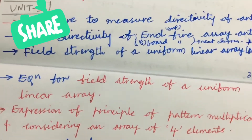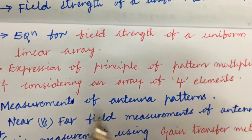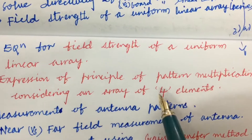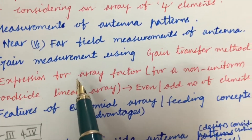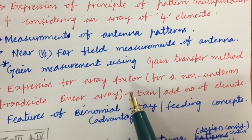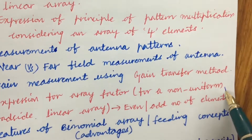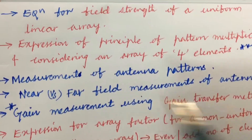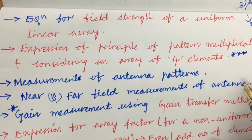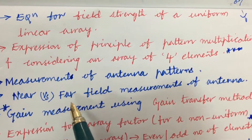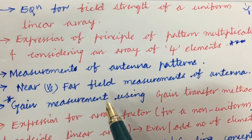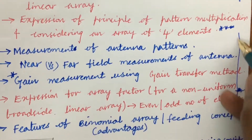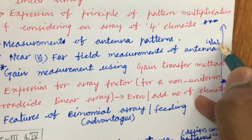Do not skip any part I am focusing here. Work out each and every concept. The expression of the principle of pattern multiplication considering an array of 4 elements, and the expression for array factor for a non-uniform broadside linear array for even as well as odd number of elements — from these two concepts we can expect a gunshot question. Also, measurements of antenna patterns explained with a neat sketch, differences between near-field and far-field measurement, and gain measurement using the gain transfer method are very important. From all these we can expect questions 4A and 4B.